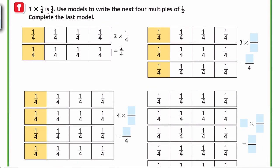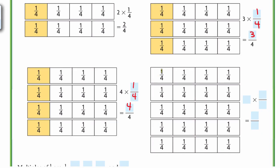One times 1/4 is 1/4. Use models to write the next four multiples of 1/4. If we have two of these fourths, that is 2 × (1/4), or 2/4. Three of them means 3 × (1/4), which is 3/4. Four of them means 4 × (1/4), which is 4/4.